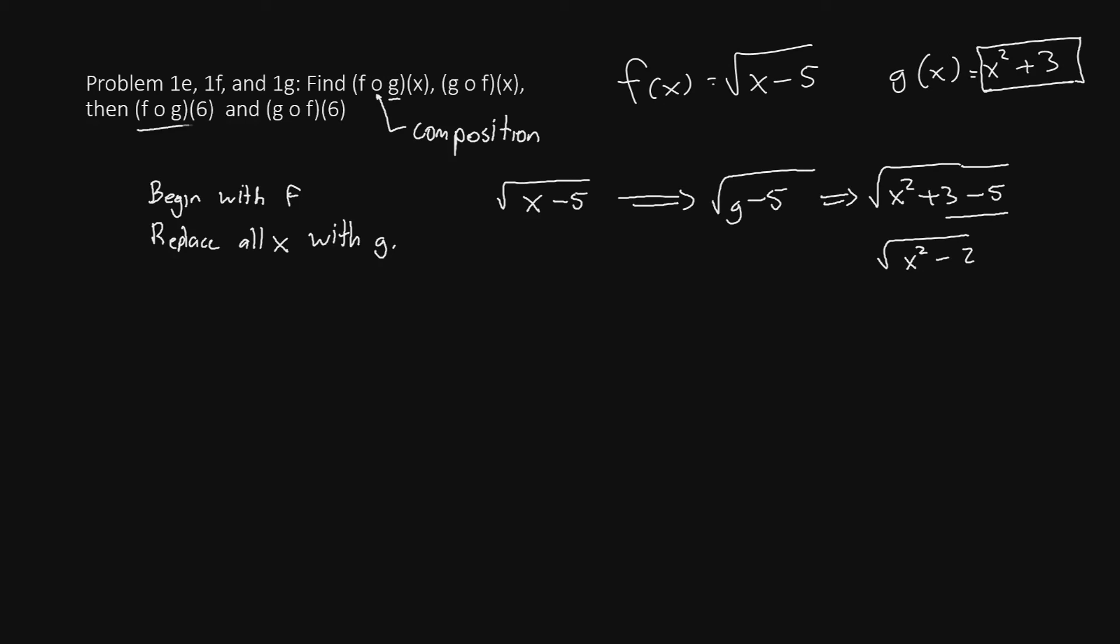We are also asked to evaluate this function we just made at 6. So let's let x equal 6, and we'll have square root of 6 squared minus 2. 6 squared is 36, and if we subtract 2, we'll have square root of 34. So the square root of x squared minus 2 is our composite function, and then when we evaluate at 6, we get square root of 34.